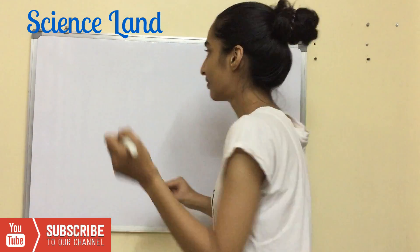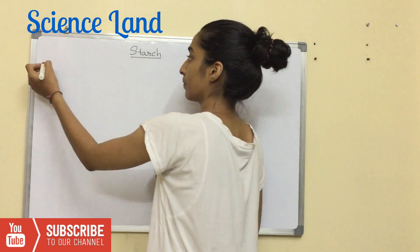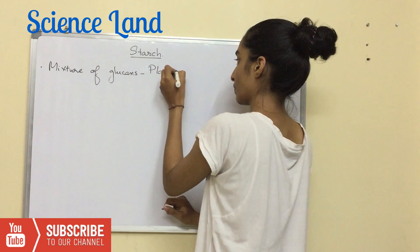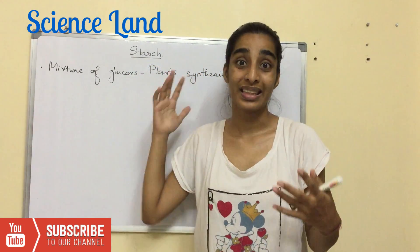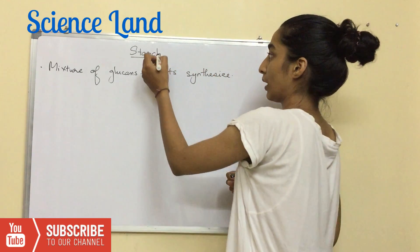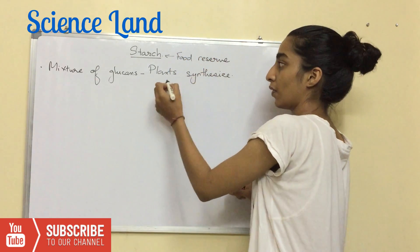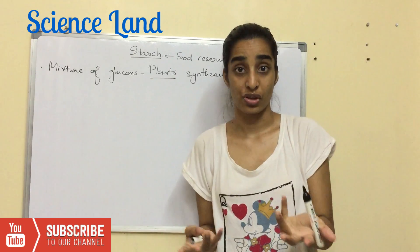Today we're going to talk about starch. Starch is basically a mixture of glucose that plants synthesize. Plants synthesize it because starch is the food reserve for plants — a common example is potato tubers.